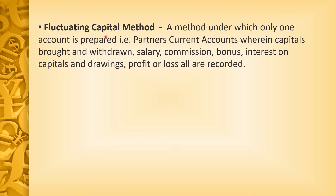Next is the Fluctuating Capital Method. Under the Fluctuating Capital Method, only one account is prepared. It is a method under which only one account is prepared, that is the Partner Capital Account, where capitals brought and withdrawn, salary, commission, bonus, interest on capital, and drawings — profit or loss — are all recorded in that one account.